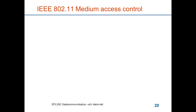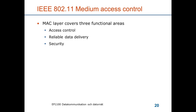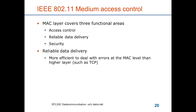The MAC layer in the standard covers three functional areas: access control, reliable data delivery, and security. Reliable data delivery is handled at the MAC level because it's more efficient than dealing with errors at higher levels such as the transport protocol level, which works end-to-end and has much longer delays in feedback than what you have over a wireless link between an access point and a station.